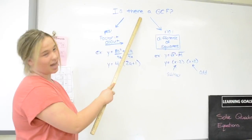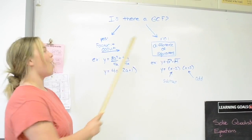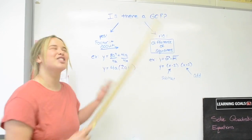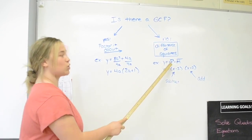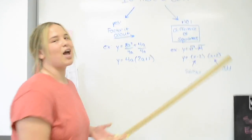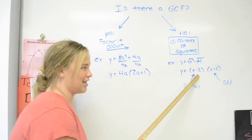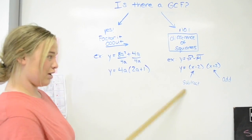Gotta see if there's a GCF. If yes, then factor it out. If no, then difference of squares — cause that's what it's all about. Square root, terms — cause now you're starting to learn. Put them into different brackets, give each operation a turn.